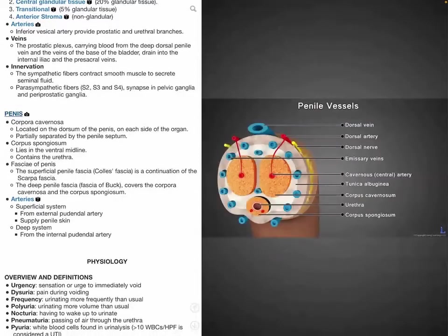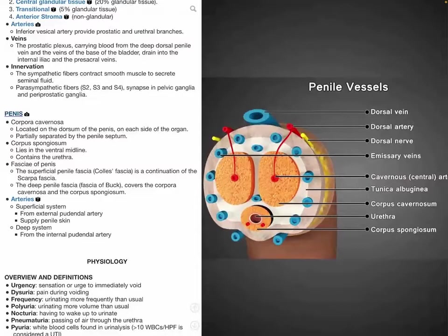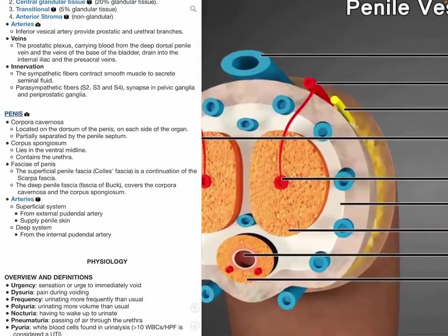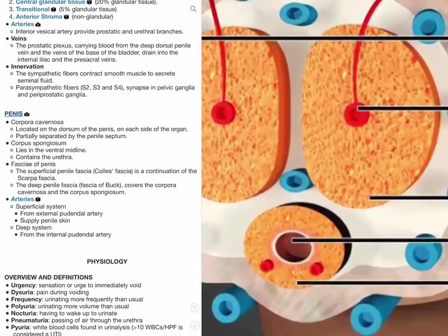When discussing the penis, the corpus cavernosa are located within the dorsum of the penis, one on each side. It contains the cavernous central artery, also known as the deep artery of the penis. The corpus spongiosum is located midline within the ventral aspects of the penis and contains the urethra.